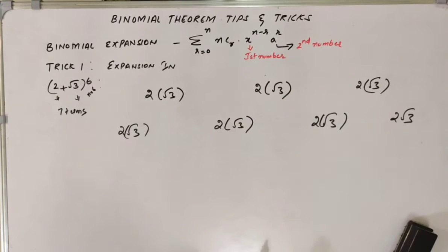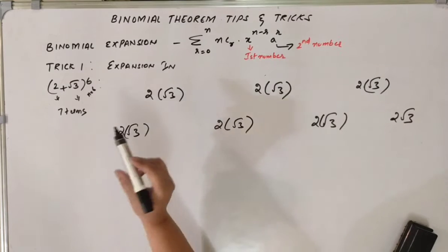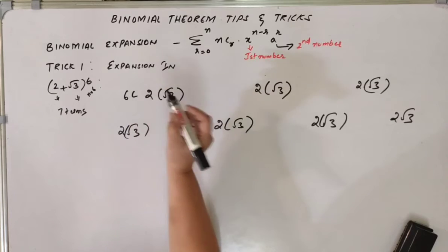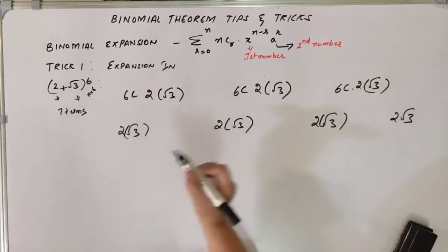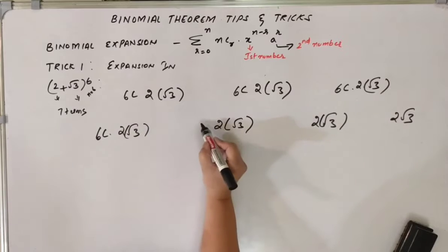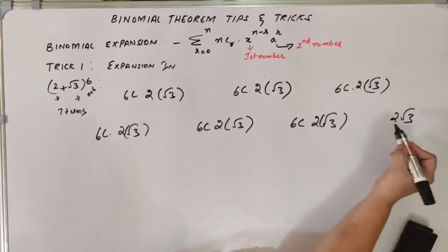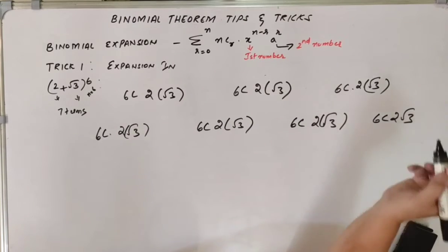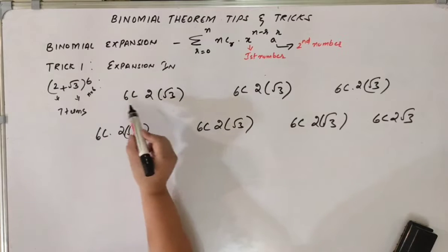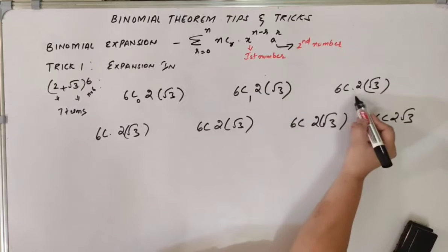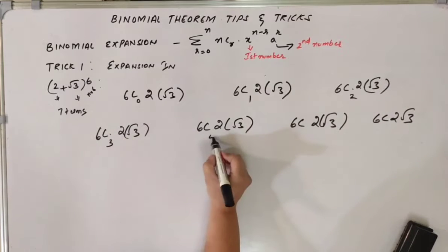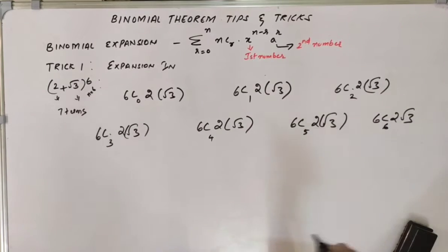We write it 7 times: 1, 2, 3, 4, 5, 6, 7. Now we will have to write the NCR values. Since n is 6, we write 6C for each term. Then we write the R values: 6C0, 6C1, 6C2, 6C3, 6C4, 6C5, 6C6.